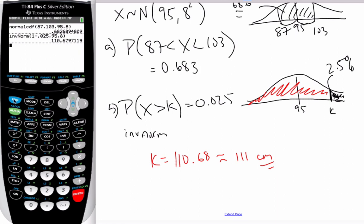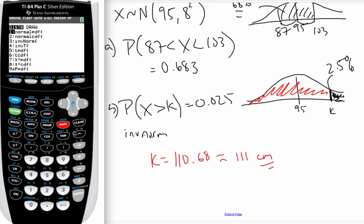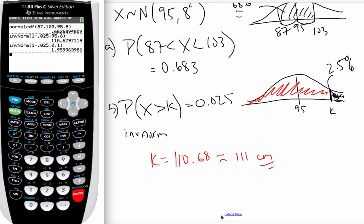Now, I could have also done this if I went to inverse norm. If I would have called the mean 0, and my standard deviation of 1, the value here, I would have gotten. Then, with this value here, this is going to be 1.96.